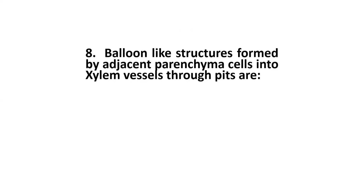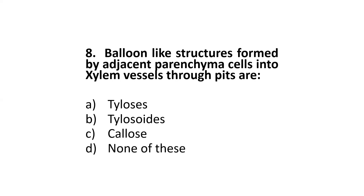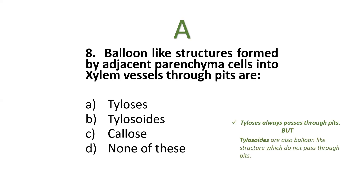Next: balloon-like structures formed by adjacent parenchyma cells into xylem vessels through pits are — tylosis, tylosoids, callus, or none of these? The correct option is tylosis. The difference between tylosis and tylosoids: tylosoids are also balloon-like structures but do not pass through pits, while tylosis always passes through pits.